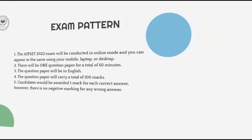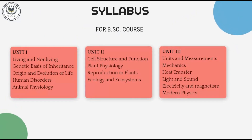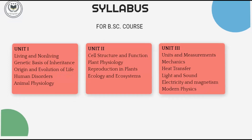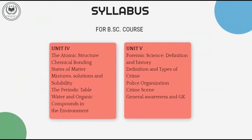Syllabus for B.Sc course. Unit 1: Living and Non-Living, Genetic Basis of Inheritance, Origin and Evolution of Life, Human Disorders, Animal Physiology. Unit 2: Cell Structure and Function, Plant Physiology, Reproduction in Plants, Ecology and Ecosystems. Unit 3: Units and Measurements, Mechanics, Heat Transfer, Light and Sound, Electricity and Magnetism, Modern Physics. Unit 4: Atomic Structure, Chemical Bonding, States of Matter, Mixtures, Solutions and Solubility, The Periodic Table, Water and Organic Compounds in the Environment.